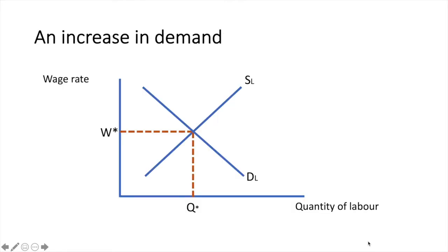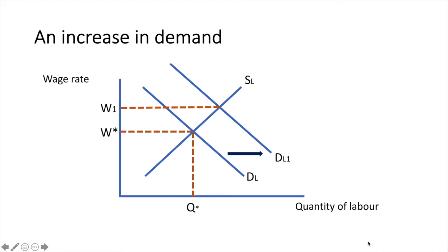Suppose there is an increase in the demand for the final good that labour is producing. This would cause an increase in the demand for labour, shifting the demand for labour from DL to DL1. I draw this in with an arrow and also add in the increase in the wage rate from W star to W1. The equilibrium quantity of labour employed in this market has risen from Q star to Q1.